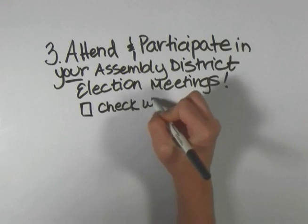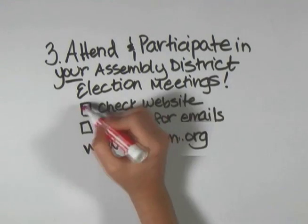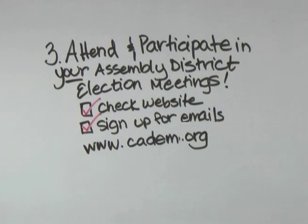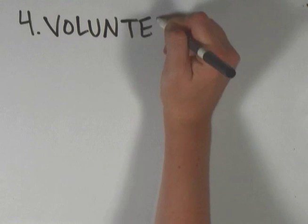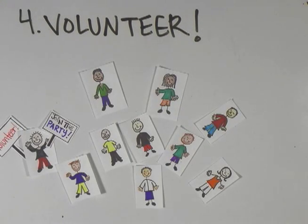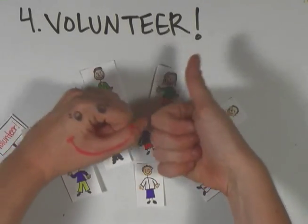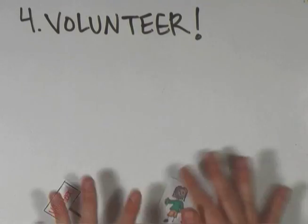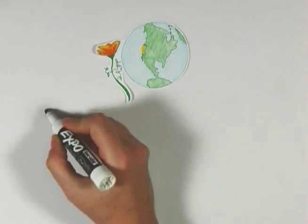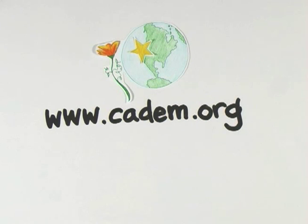You can attend and participate in your assembly district election meetings — check our website and sign up for our email to get more information about the ADEMs as they get closer. You can also volunteer for the state party, as we always need volunteers at our meetings and during election season. It's a very exciting time to be a California Democrat. To learn more about the California Democratic Party, visit our website and get involved. Thanks for your engagement and for helping make California and the world a better place to be.